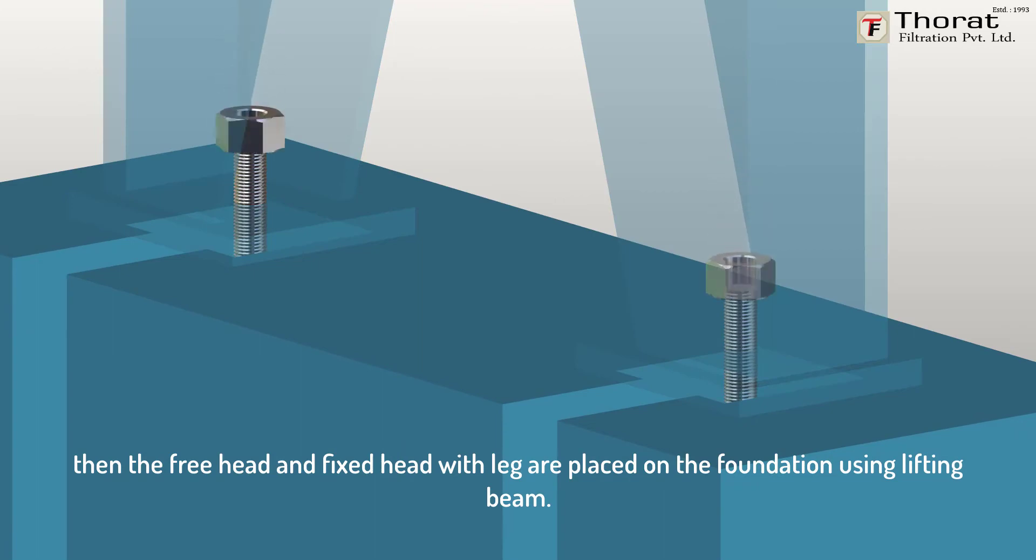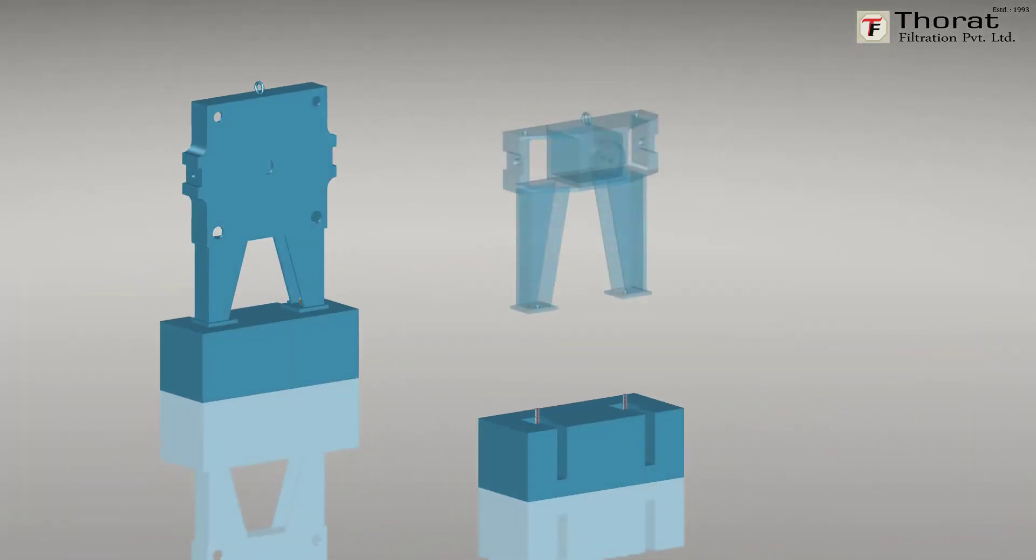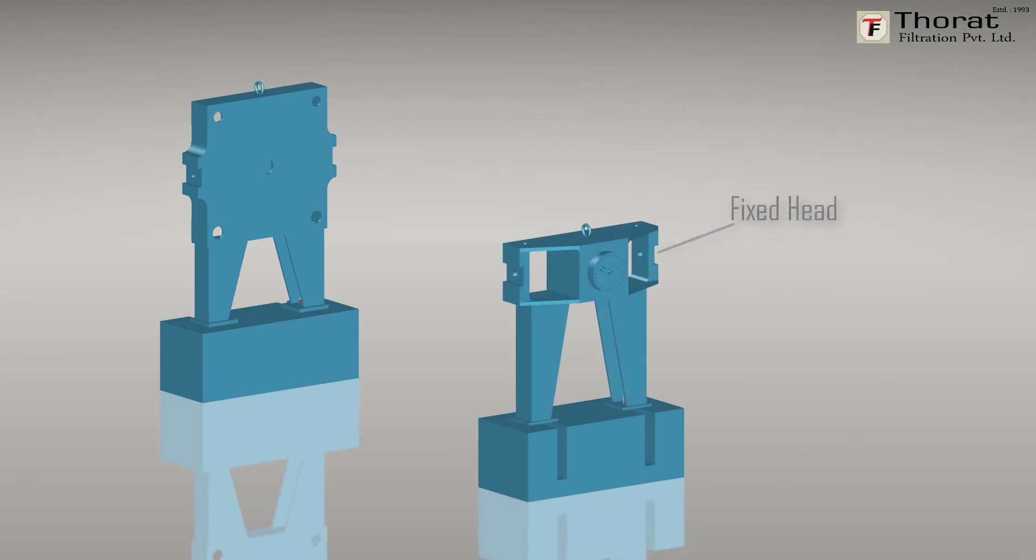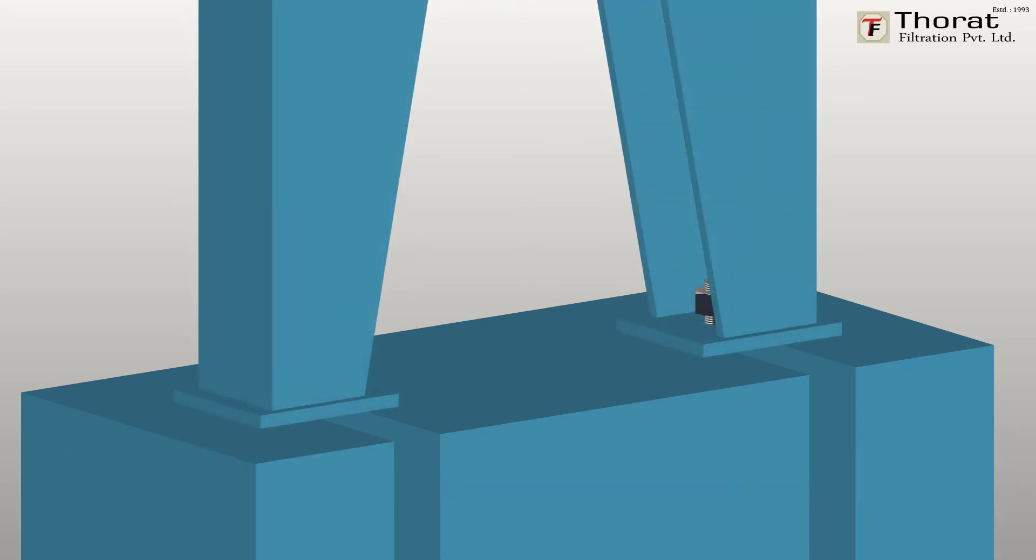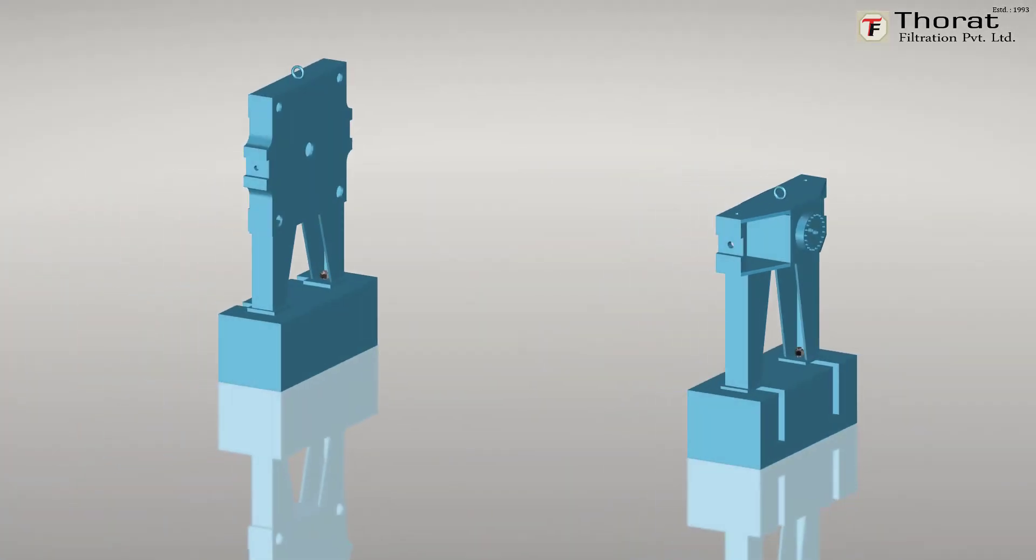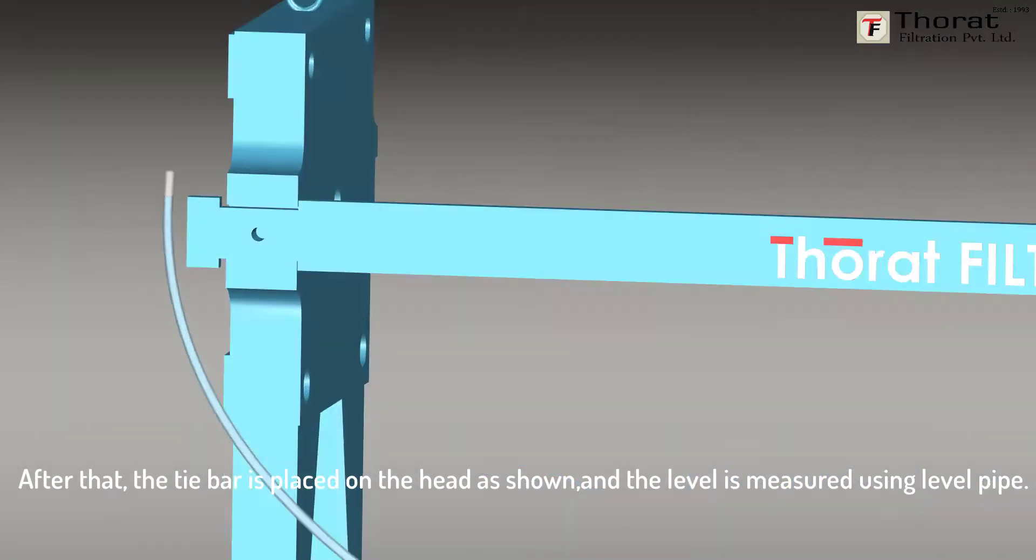When both heads are placed on foundation, the nuts are screwed on all foundation bolts and left loose. After that, the tie bar is placed on the head as shown and the level is measured using level pipe.